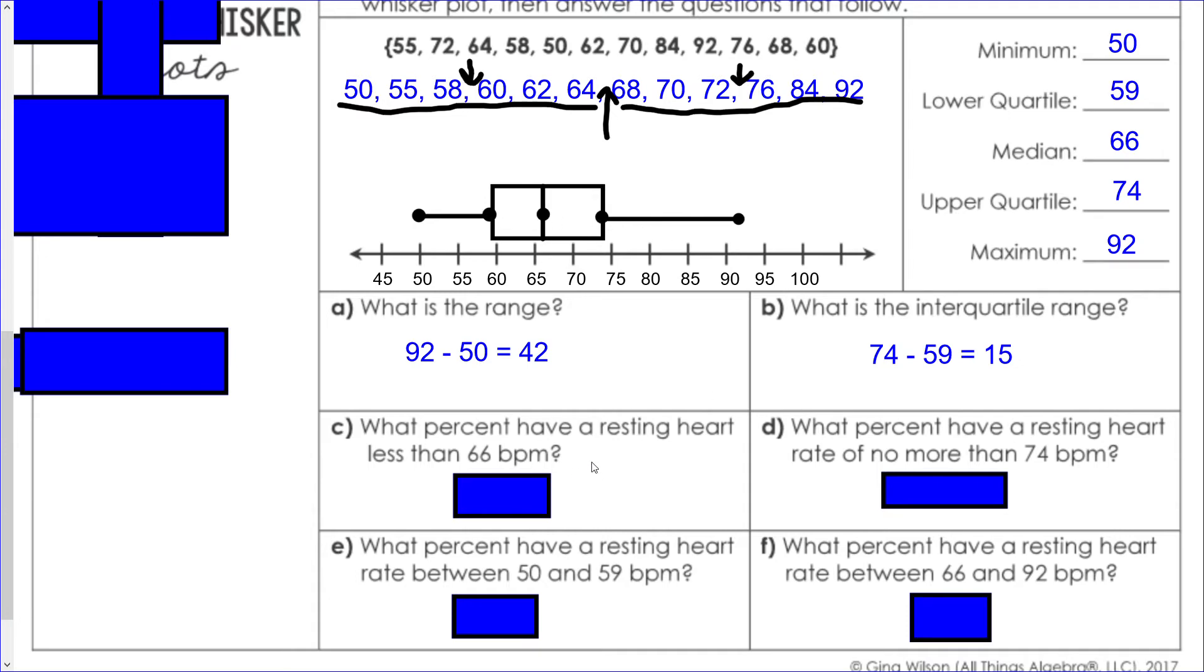What percent have a resting heart rate of less than 66 beats per minute? Our median is 66, so 50 percent are below that. What percent have a resting heart rate of no more than 74 beats per minute? 74 is our upper quartile, so 75 percent of the numbers are below that.